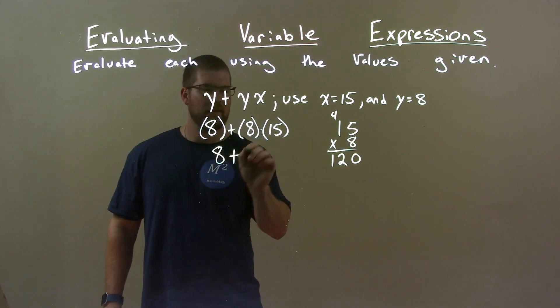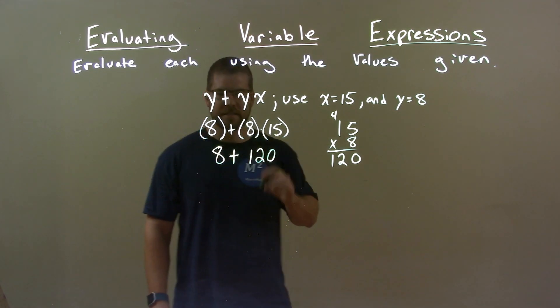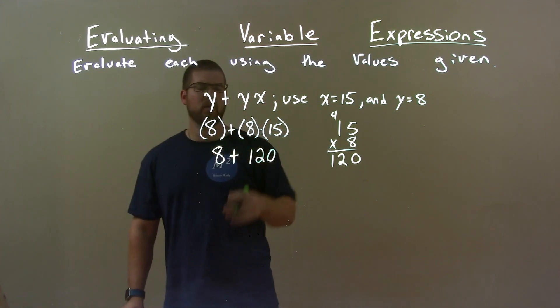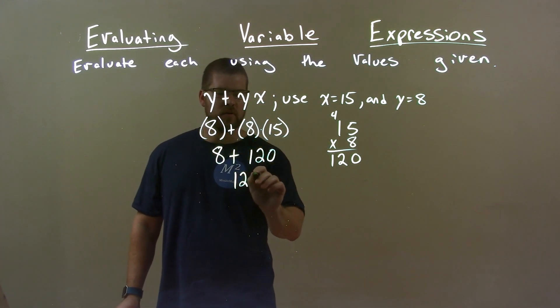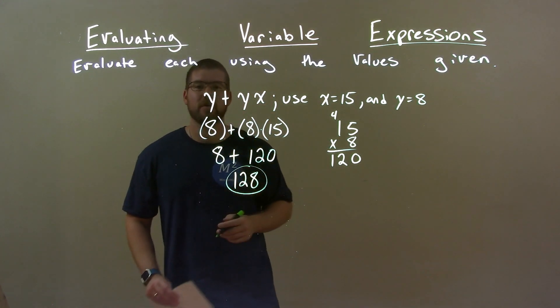So we have 8 comes down. 8 times 15, 120. Now 8 plus 120 is easy, 128. And so there is our final answer.